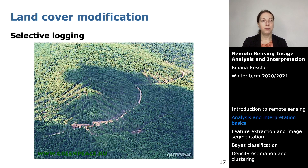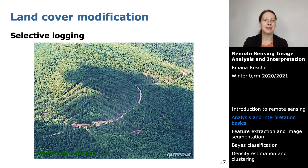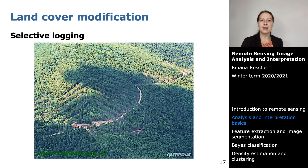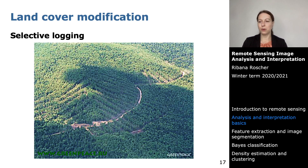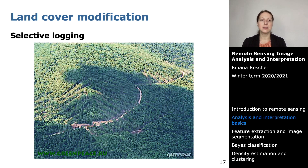An example of land cover modification is selective logging — deforestation resulting in a regular pattern. This image shows the typical pattern: one row of trees has been cut down and the neighboring row has not, creating alternating rows of deforestation and forest. This is a kind of deforestation without radical intervention in the ecosystem.